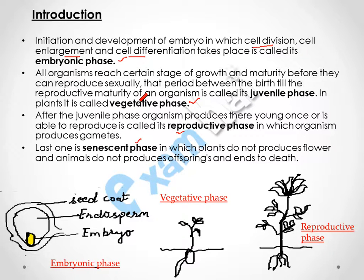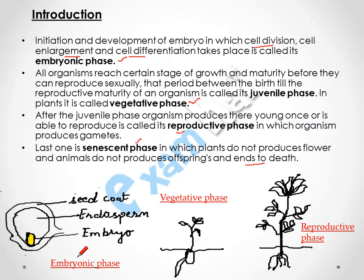After the juvenile phase, when the plant is able to produce young ones and reproduce flowers, that phase is called the reproductive phase. The last one is the senescence phase, in which the plant is not able to produce any kind of flower and then leads to death. As you can see in this diagram, the embryonic phase shows an embryo with a covering of endosperm which provides nourishment, and a seed coat that provides a protective covering to the embryo.